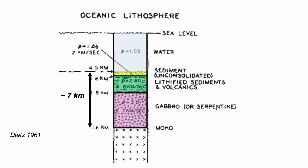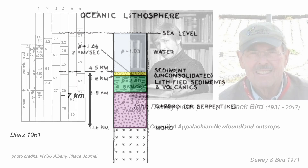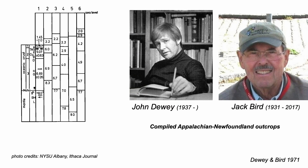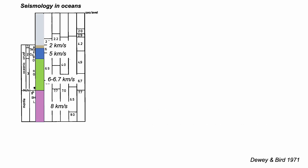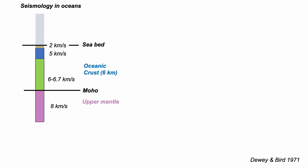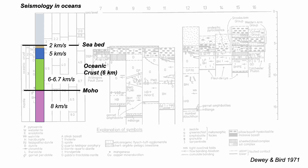Moving on a decade, the hunt for the structure of ocean crust was on, and this hunt turned to the land where rocks could be readily studied. An important study was compiled by John Dewey and Jack Bird, then colleagues at New York State University at Albany. They were working on the geological structure of the ancient Caledonian mountain belt — collision tectonics — and they found slices of what they believed were former ocean crust caught up in their mountain belt system. In presenting their findings, they first compiled information on the layered crust in the oceans, and then compared this with sections of possible ocean crust caught up in the old mountain belt.